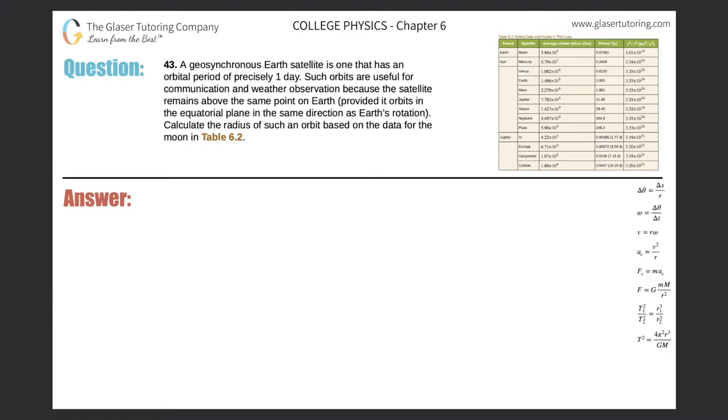Number 43: A geosynchronous Earth satellite is one that has an orbital period of precisely one day. Such orbits are useful for communication and weather observation because the satellite remains above the same point on Earth, provided it orbits in the equatorial plane in the same direction as Earth's rotation. Calculate the radius of such an orbit based on the data for the Moon.